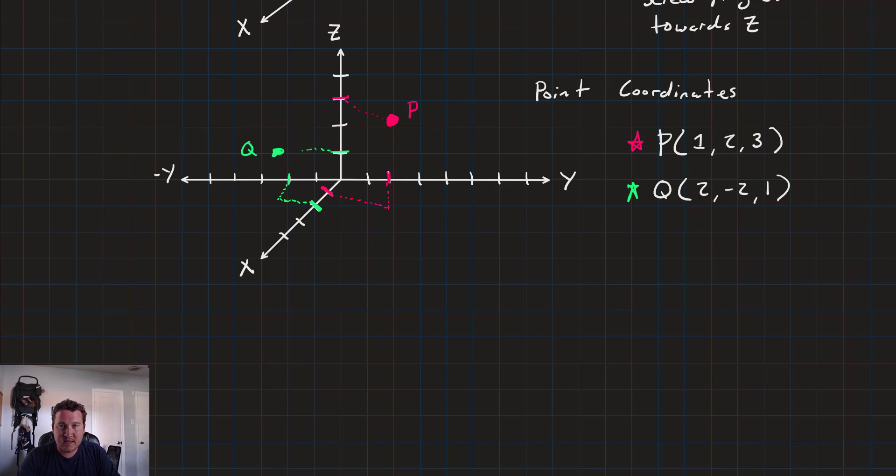One last thing we're going to talk about is the distance between two points. That's going to come up fairly frequently. The distance between p and q is given by this expression. And it's just Pythagorean Theorem. And all we're saying is the distance is x of p minus x of q.